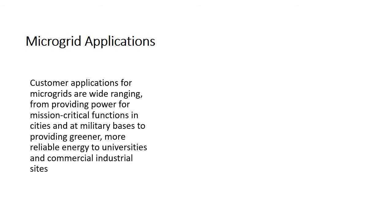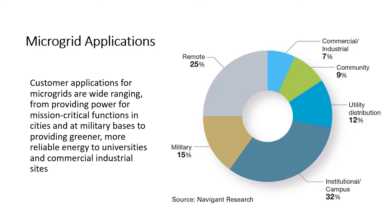According to Navigant Research, 32 percent of microgrids are currently used for institutions and campuses, 12 percent are used for utility distribution, 25 percent of microgrids are standalone type at remote places, and military microgrids account for 15 percent.